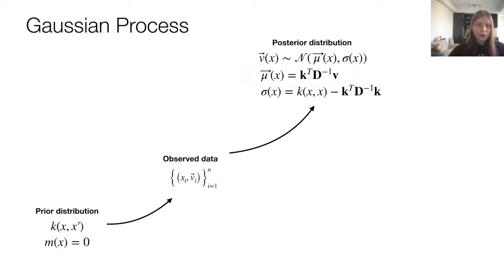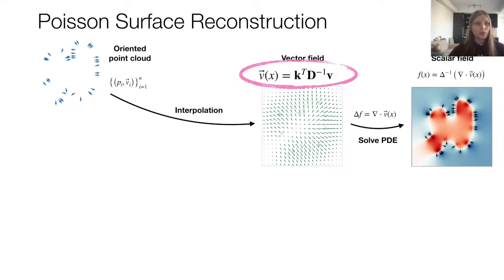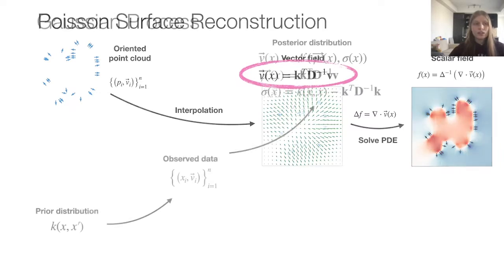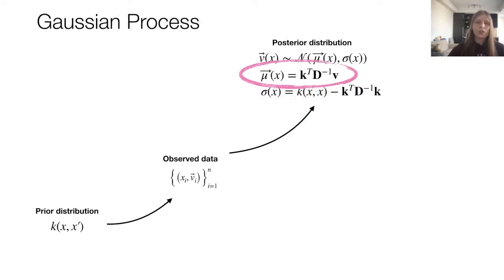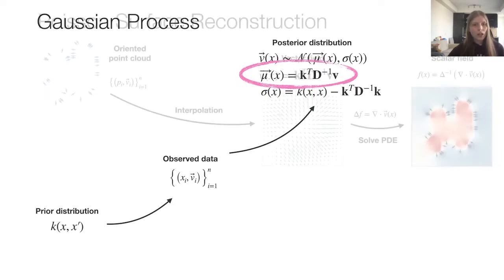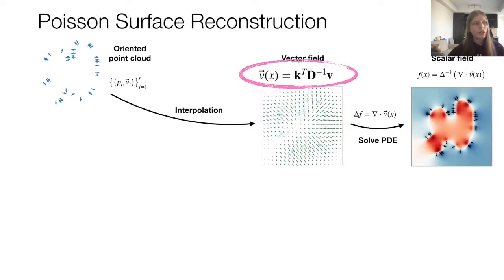So this is where I wanted to get to, a vector-valued Gaussian process with a zero-mean prior and lumped covariance matrices. Again, the most critical part of this is that, like I promised, we reached this equation for the mean of the Gaussian process. This equation is the same as the equation for the Poisson's surface reconstruction vector field. This is our major contribution.